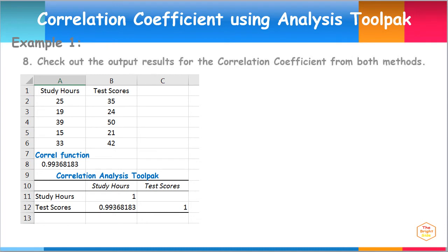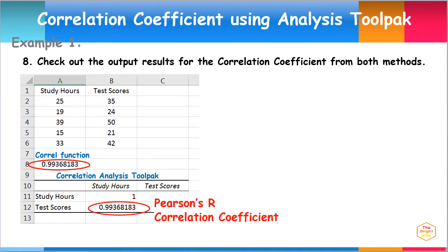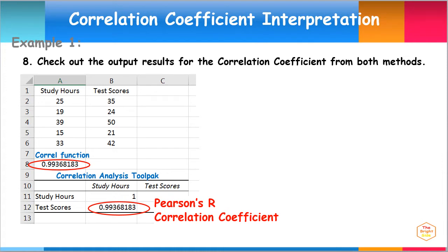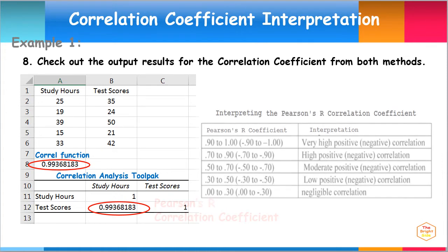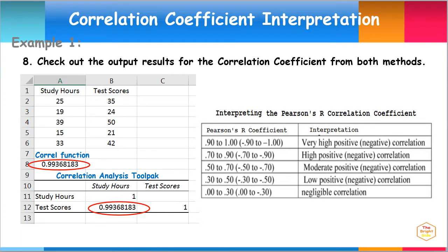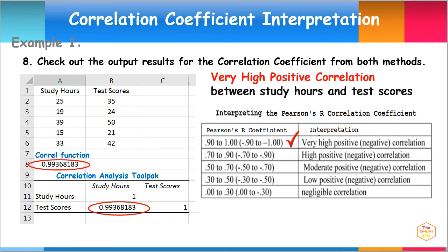Check out the output results for the correlation coefficient from both methods. Notice that both methods gave the same correlation coefficient of 0.99368183. This is the Pearson's R correlation coefficient. Comparing this result from the table of interpreting the size of the correlation coefficient, the coefficient falls within the range 0.90 to 1.00. Thus, the interpretation is very high positive correlation. Therefore, we can conclude that there is a very high positive correlation between students' study hours and their test scores.